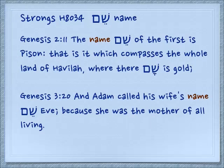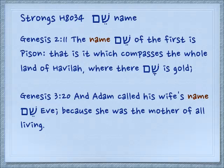There is another word that without the vowel, you would never know which word you're looking at, and that is shem. So sham is going to have a kamatz — the little T-shape — and shem is going to have the two dots. Genesis 2:11: The name — shem — of the first is Pishon. That is it which compasses the whole land of Havilah, where there — sham, in that place — is gold.